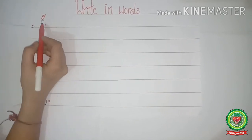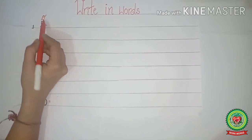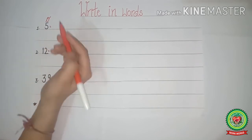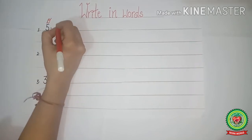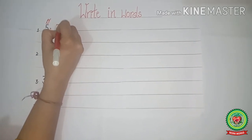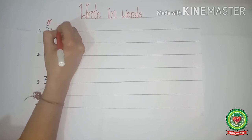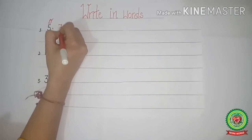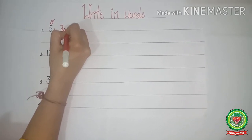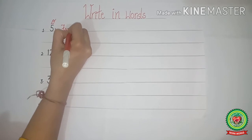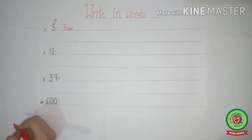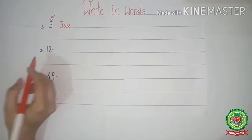Now what comes under 1s? 5. So we will write spellings of 5. You all speak together with me. Spell 5 - F-I-V-E. Spell 5 - F-I-V-E.